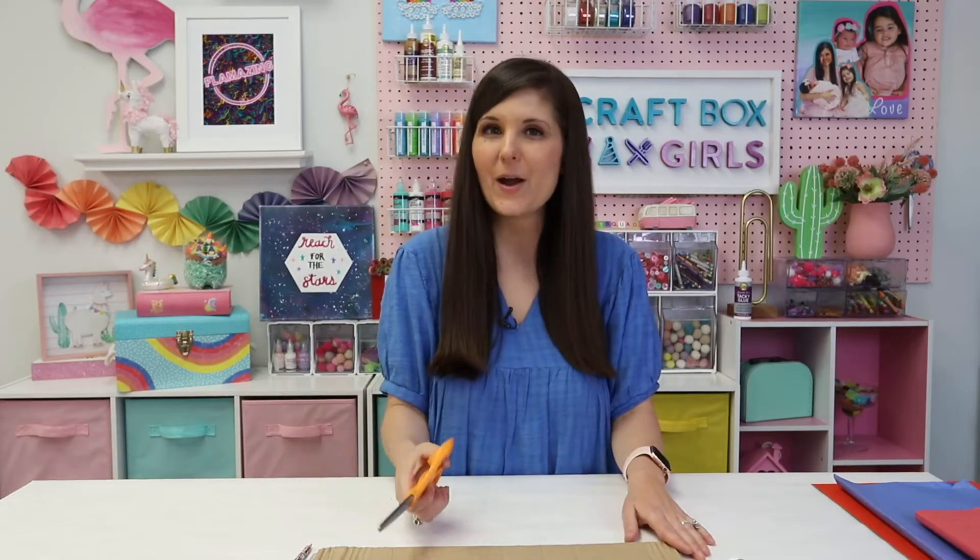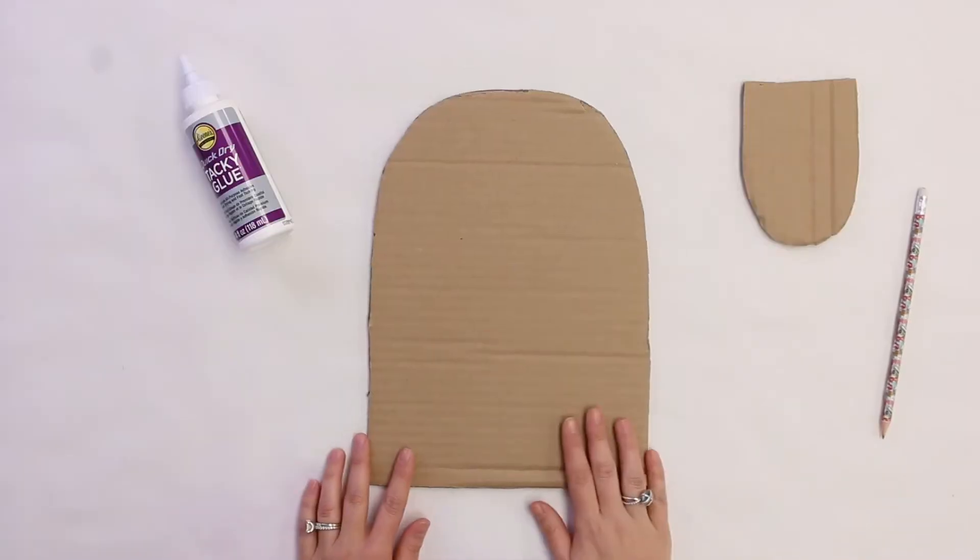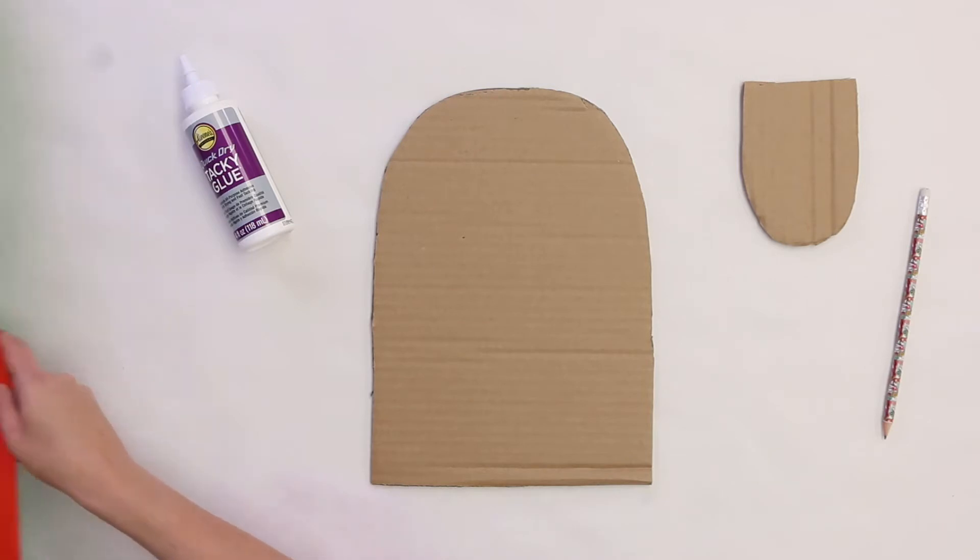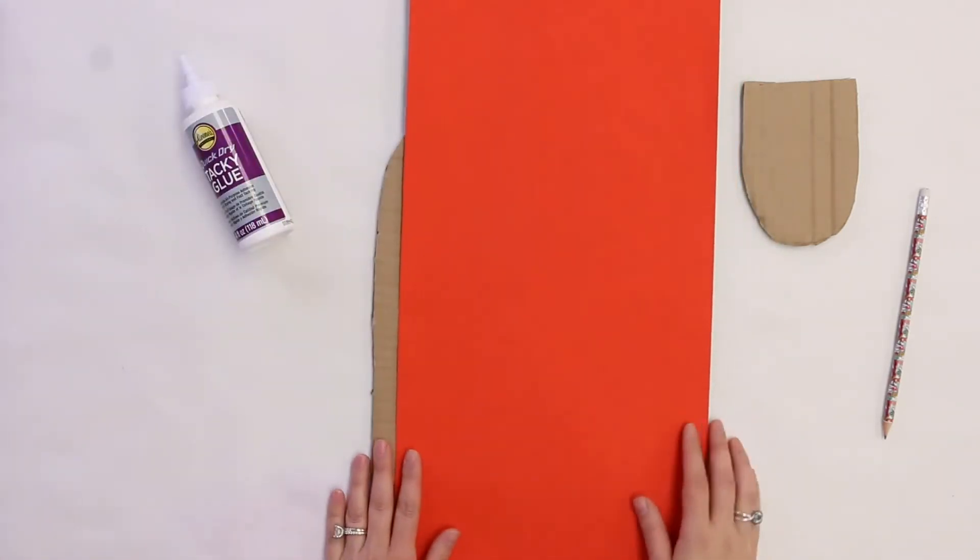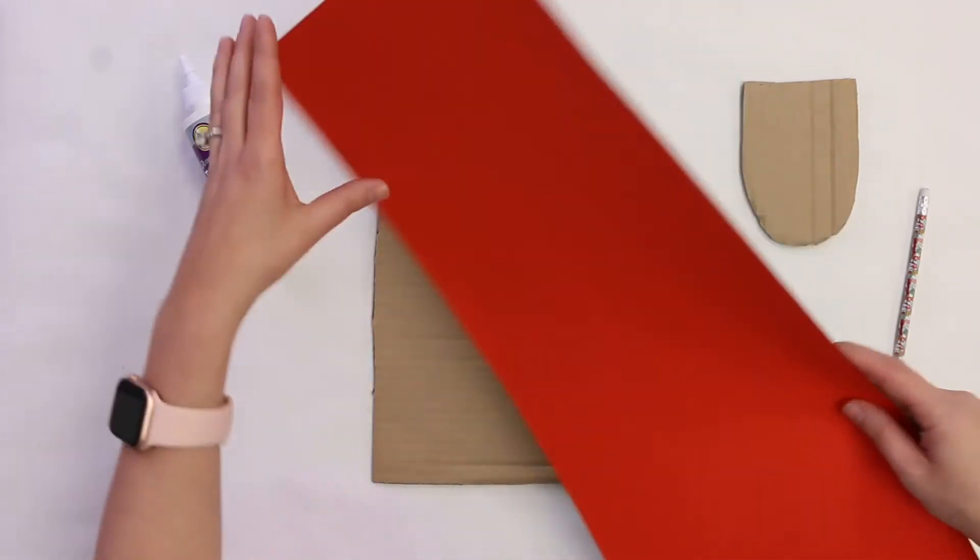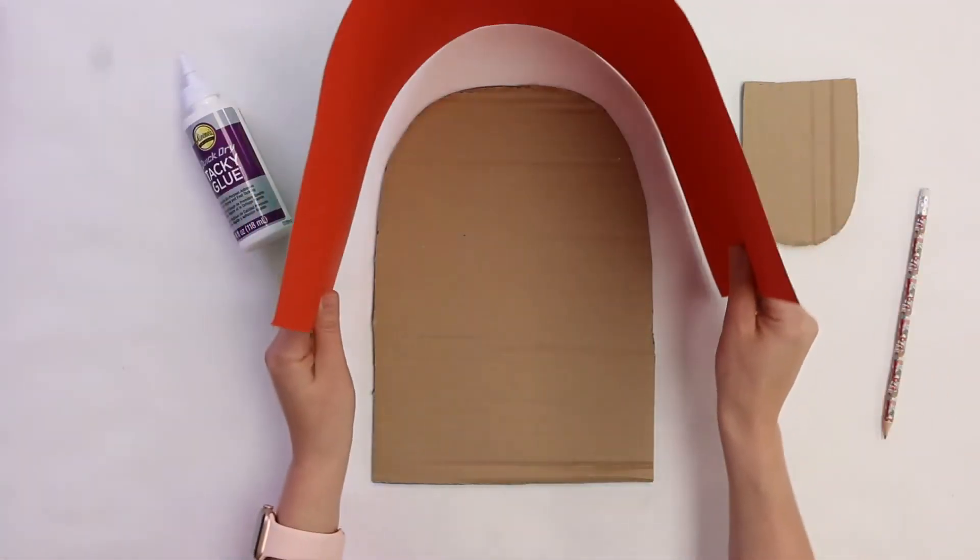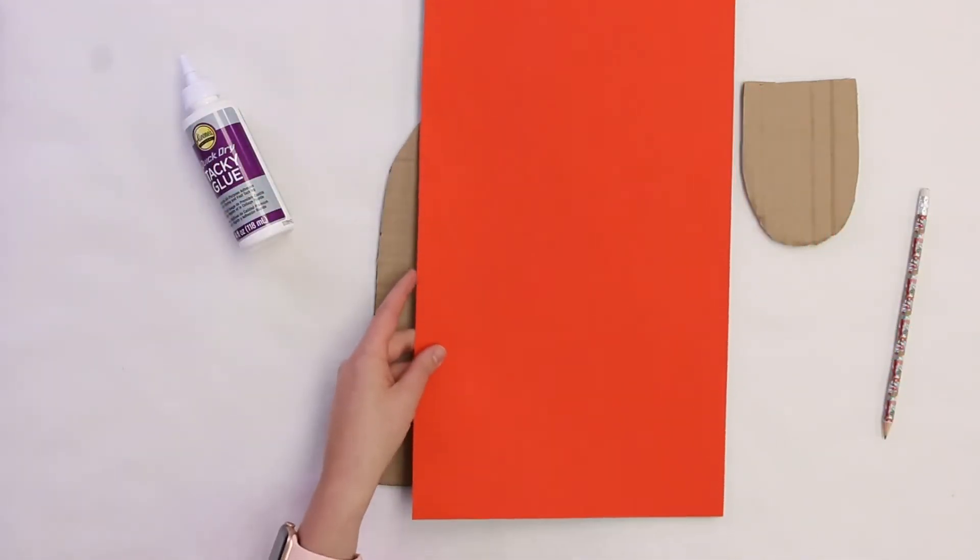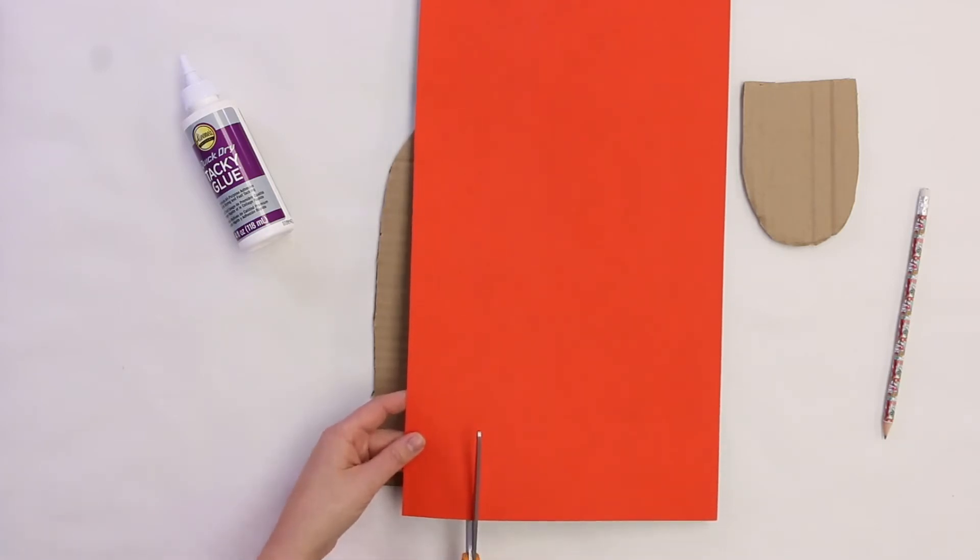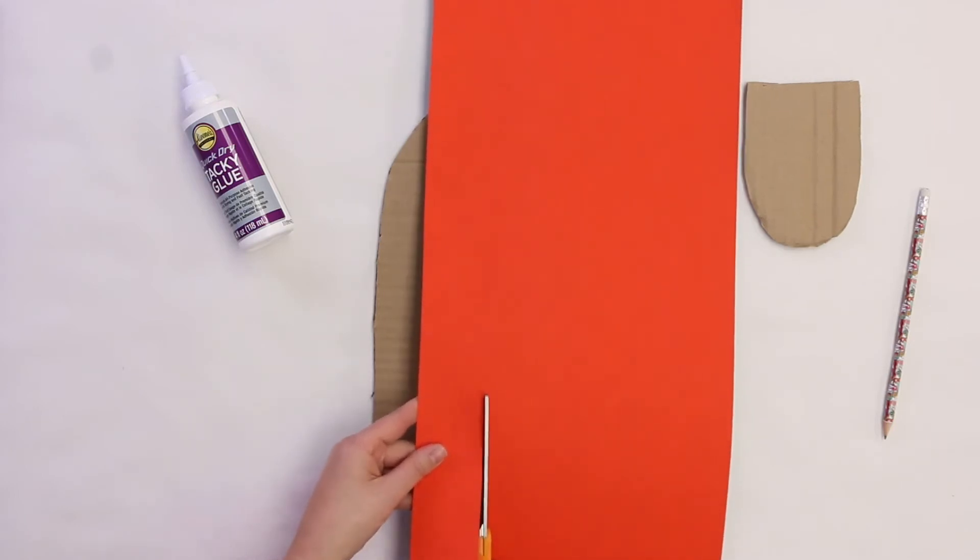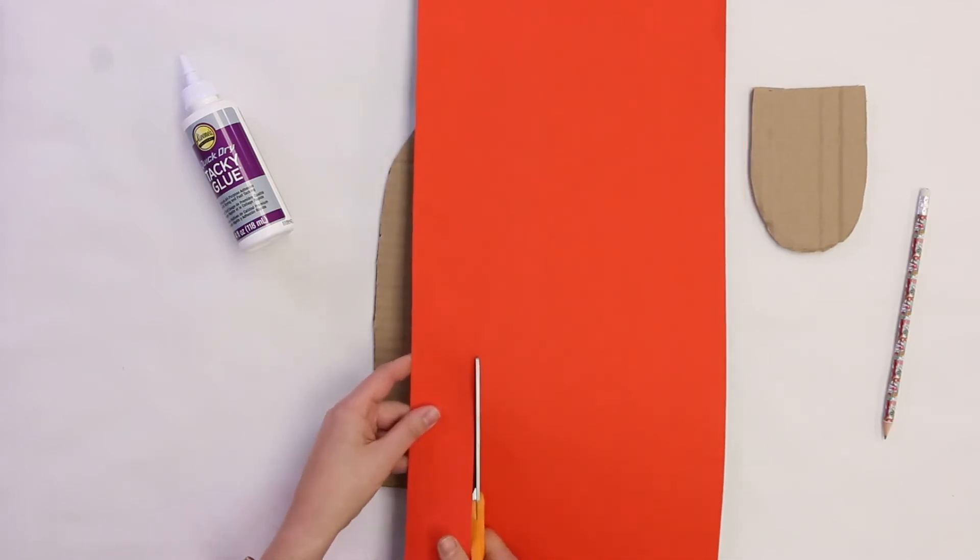Next step, we're going to use our scissor and cut it out. Now here's where your poster board comes into play. You're going to need a piece of poster board. It does not matter what color it is. The poster board is going to be how we create the frame on our popsicle, but we need to decide how thick we want our popsicle to be.